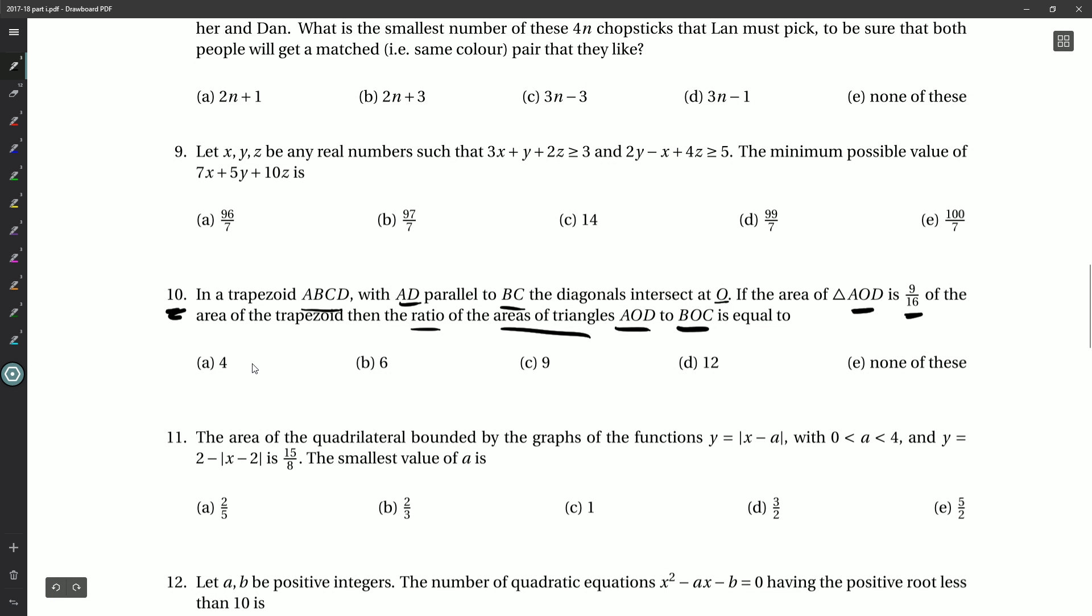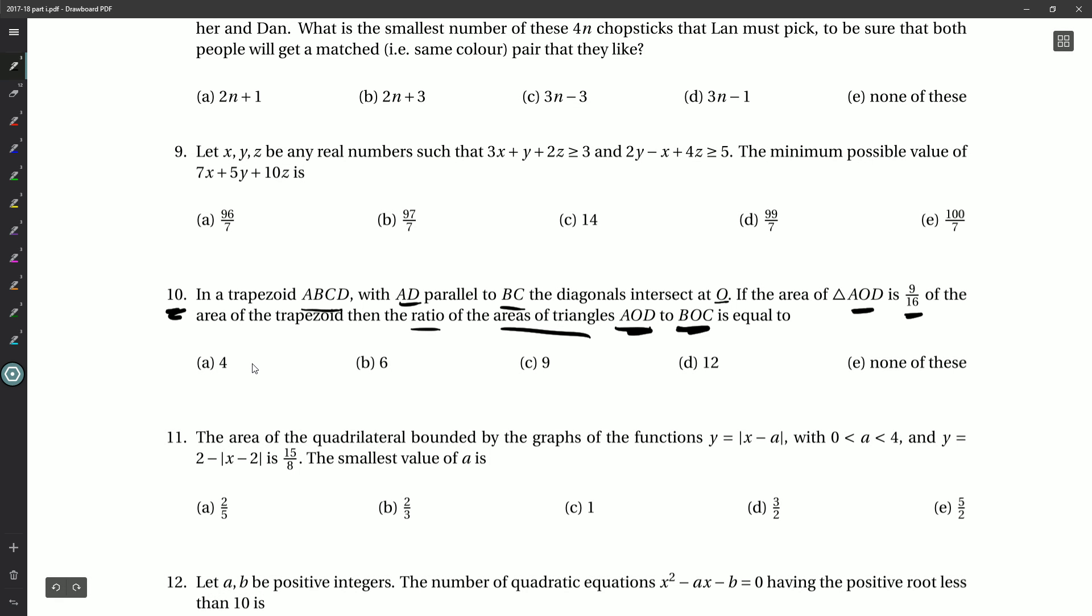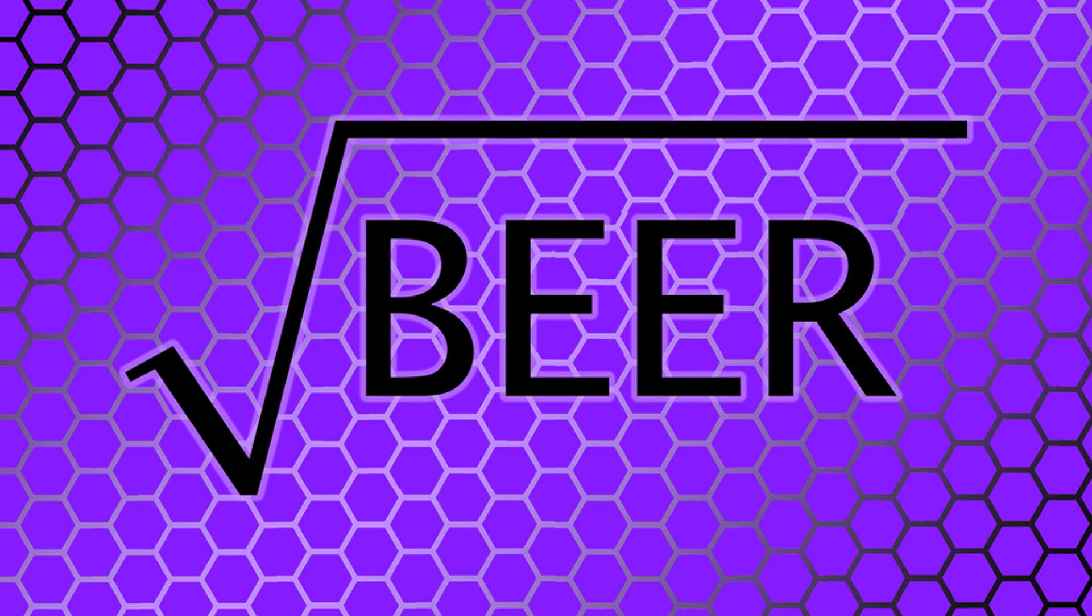Now, what did we want? We wanted the area of AOD to BOC. That one over that one, and we get nine-sixteenths over one-sixteenth of these denominators cancel out. Nine over one, better known as nine. So the ratio here would be nine to one, or the way they've written it on this contest, we're just looking for nine. There we go, C. And we'll fix the software here, but we'll get a fresh sheet of paper for question 11. We'll come back and take a look at that in the next video.